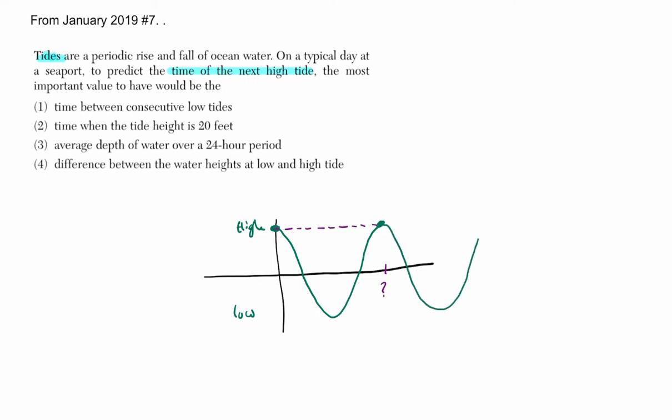It's going to repeat itself that same length, right? It's the time to the next high tide. So, for example, if that was 10 hours, that means every 10 hours, I'll go right back to high tide.